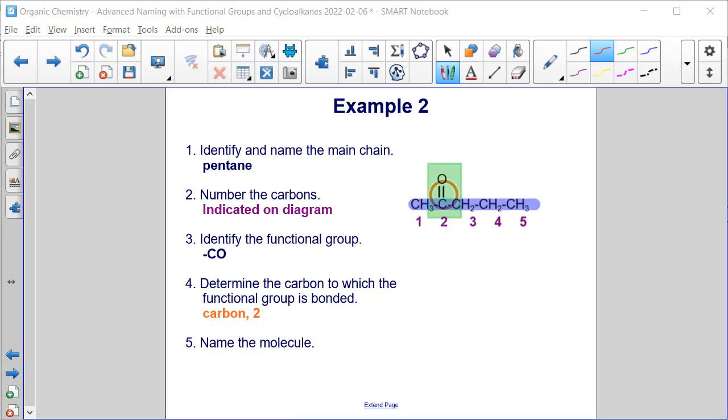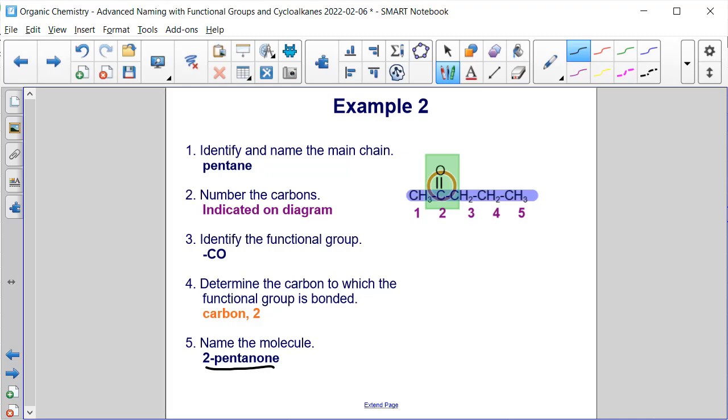All right, the last thing we do is take all these pieces together and name the molecule. So we'll start with what carbon the functional group is. So two, then it would be pentane, P-E-N, but we replace the E at the end with O-N-E. So this is called 2-pentanone. All right, here is a final summary of example two with our parent chain, the number of carbons, the functional group, and then finally the name, which we wrote on the previous slide, 2-pentanone.